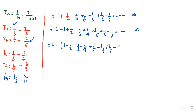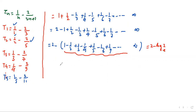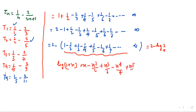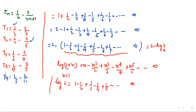Now look carefully at this series — it is nothing but the formula for log 2. Recall the series expansion of log(1+x): x - x²/2 + x³/3 - x⁴/4 + x⁵/5 up to infinity. Putting x = 1, we get log 2 = 1 - 1/2 + 1/3 - 1/4 + 1/5 up to infinity.